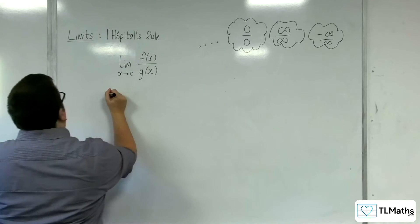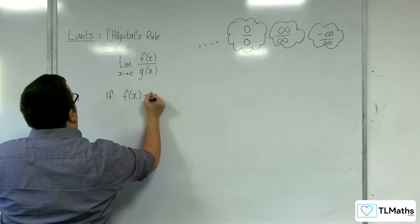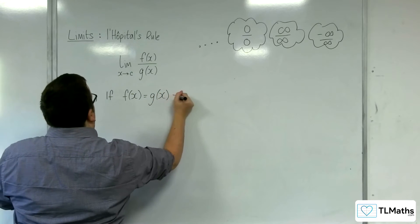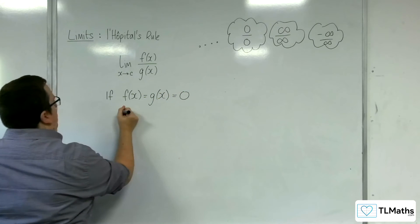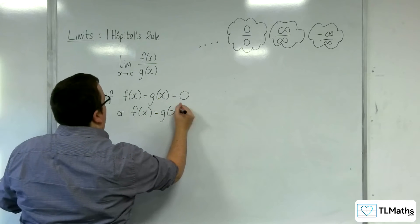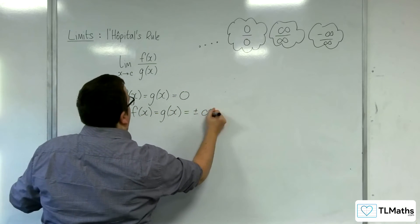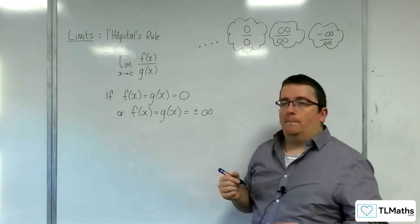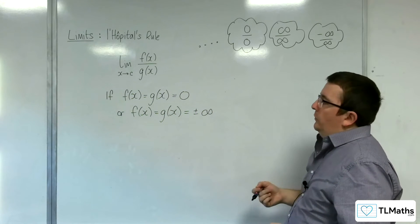If f of x equals g of x equals 0, or f of x equals g of x equals plus or minus infinity at x equals c.